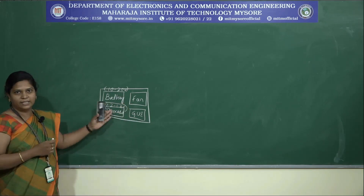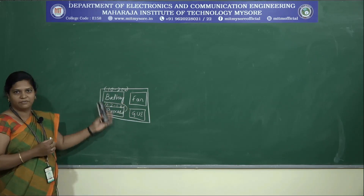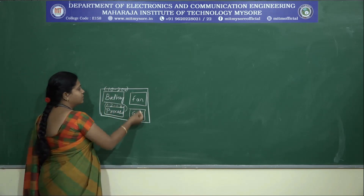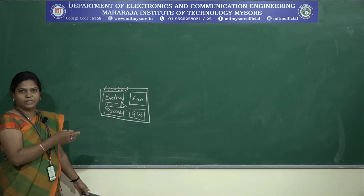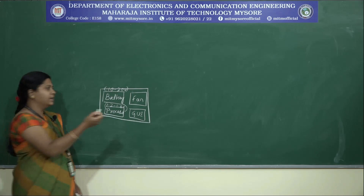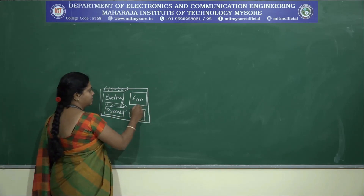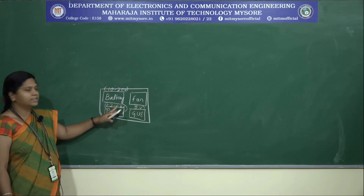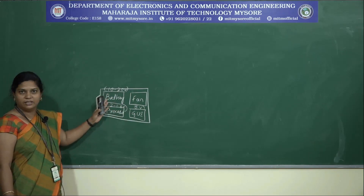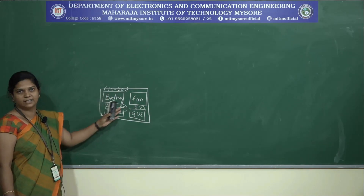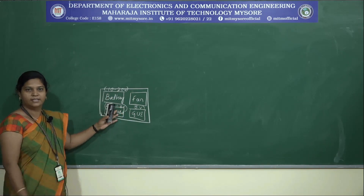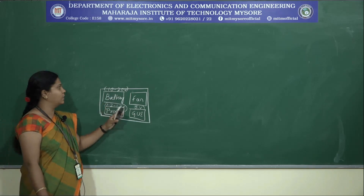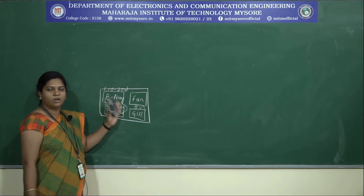These voltage values vary across systems manufactured by different companies. In general, the GUI uses a digital IC and approximately runs at around 5 volts. Internally, different devices are connected together in one system and the voltage values are also different.